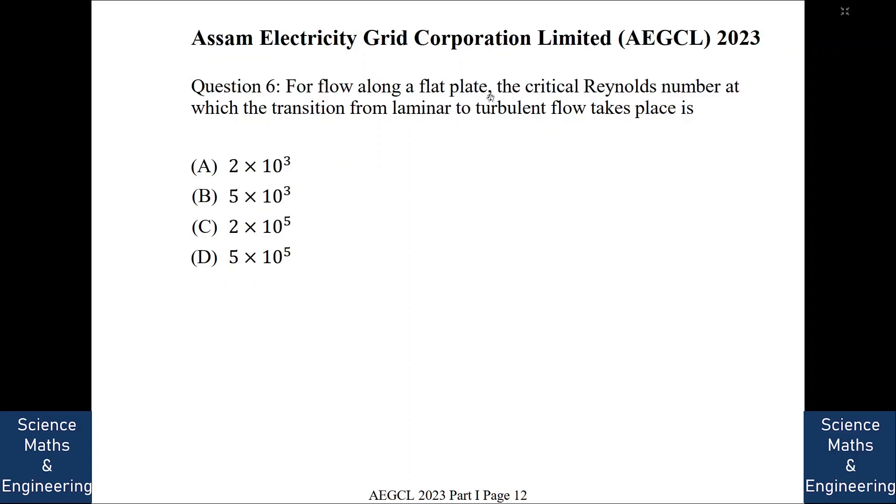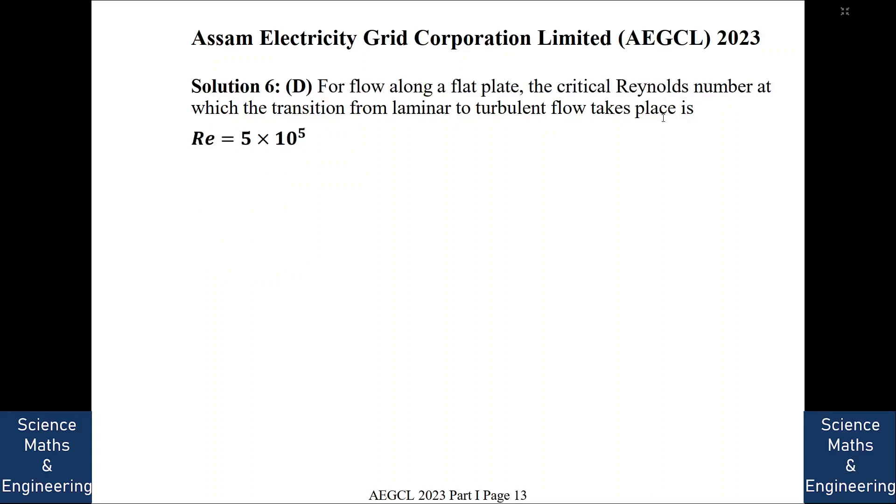For flow over a flat plate, the critical Reynolds number at which the transition from laminar to turbulent flow takes place is, the answer is, it takes place at 5 into 10 to the power 5 Reynolds number. We will go to the next question.